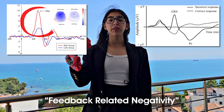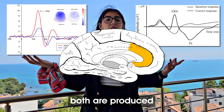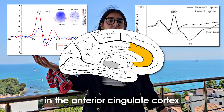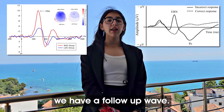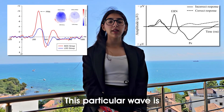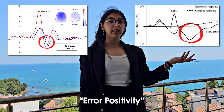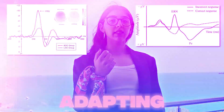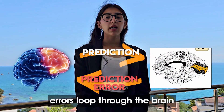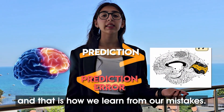We see a feedback-related negativity. Both are produced in the anterior cingulate cortex. And after this, we have a positive wave called the error-positivity, which represents learning and adapting. During learning, errors loop through the brain, and that is how we learn from our mistakes.